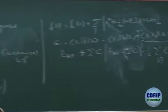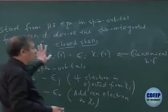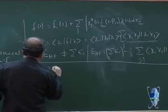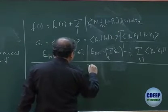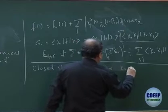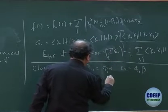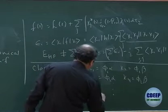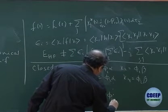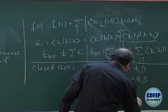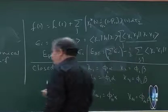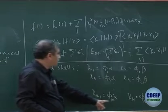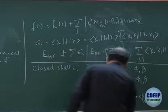With this, we now want to move over to how to perform spin integration for closed-shell systems. Closed-shell means chi_1 = phi_1 alpha, chi_2 = phi_1 beta, and so on — up to chi_{N-1} = phi_{N/2} alpha, chi_N = phi_{N/2} beta.